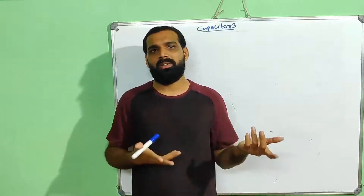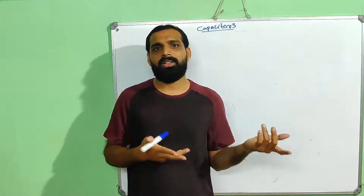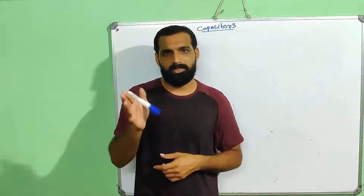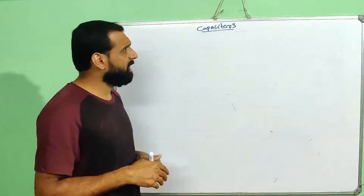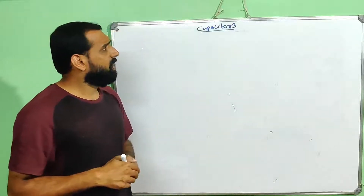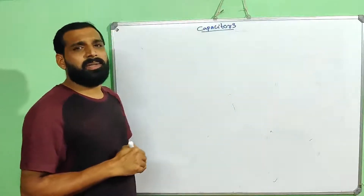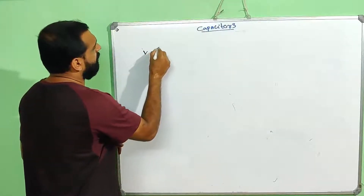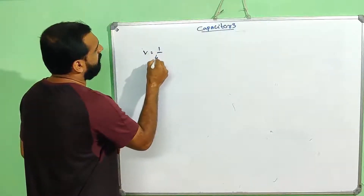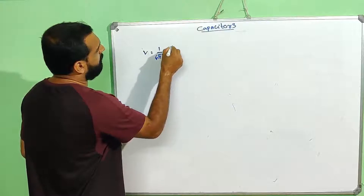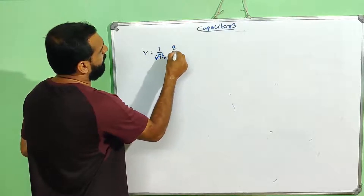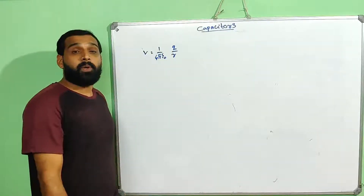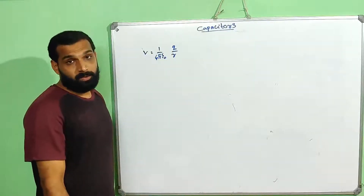You can learn more about potential and potential energy. The potential due to a point charge is V equal to 1 by 4 pi epsilon 0 into q by r. That is the potential formula.